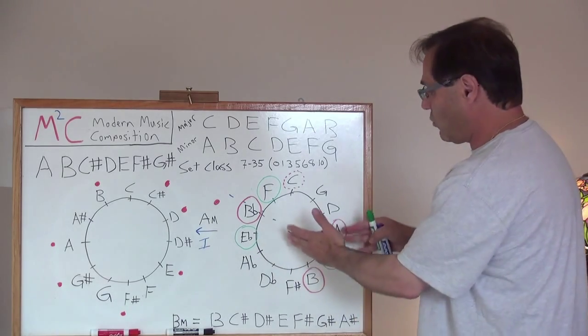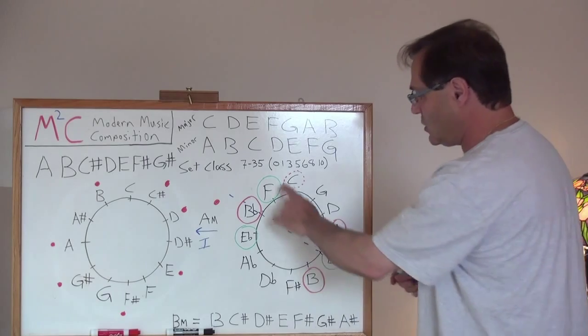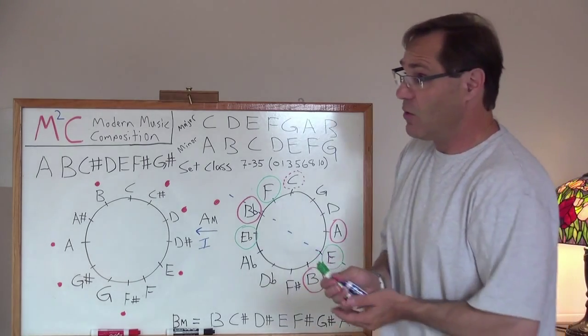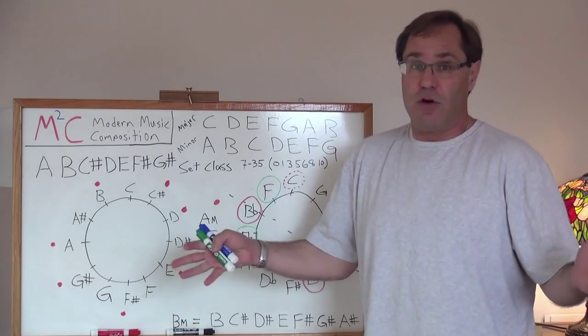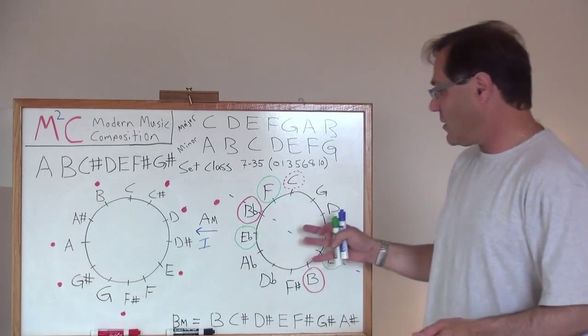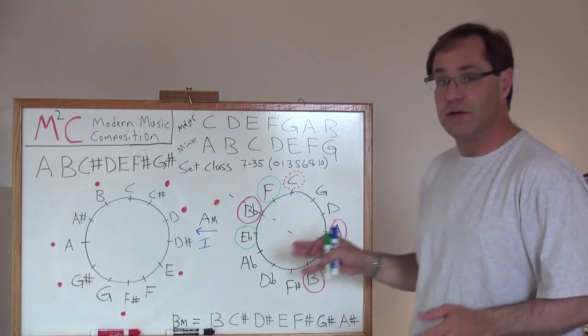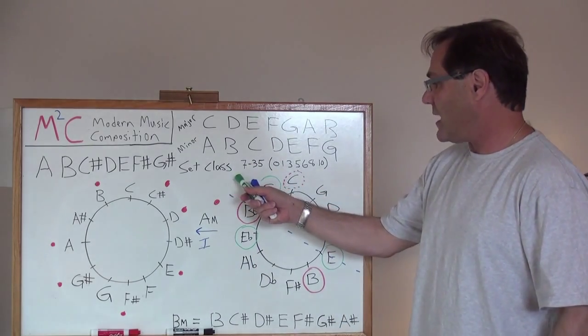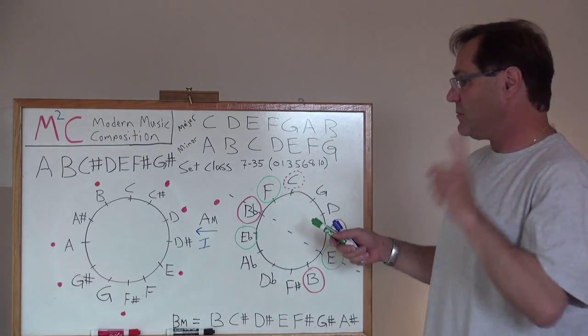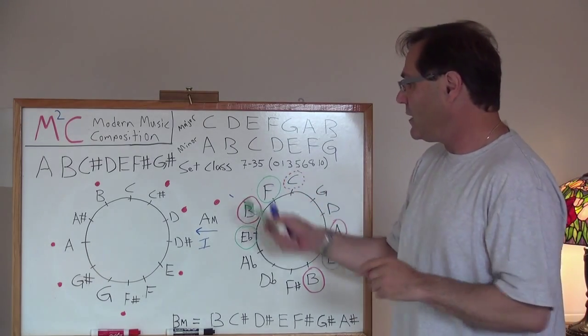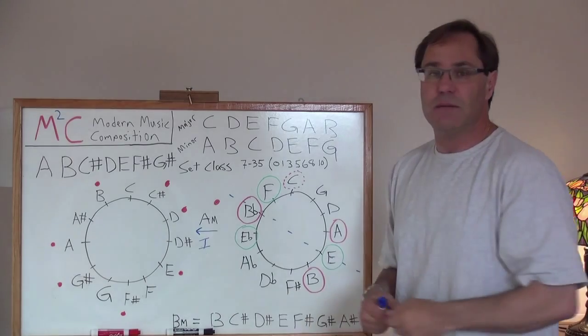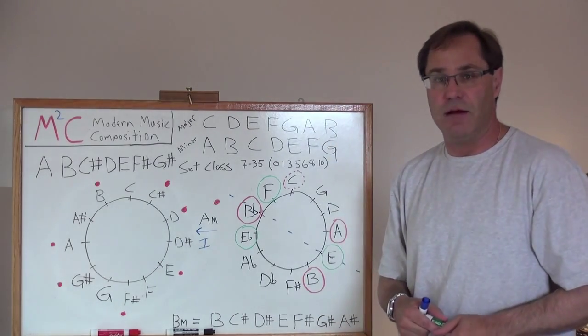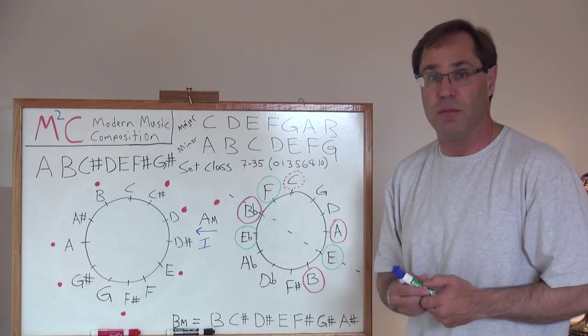So, you can think of a wonderful composition with respect to this, using properties from all these major scales. So, there you have it. You can now create some type of composition based on symmetry relations here, where we generated those symmetry relations, knowing about a particular set class. And doing some operations with respect to our graphing here of the chromatic scale in circular form.